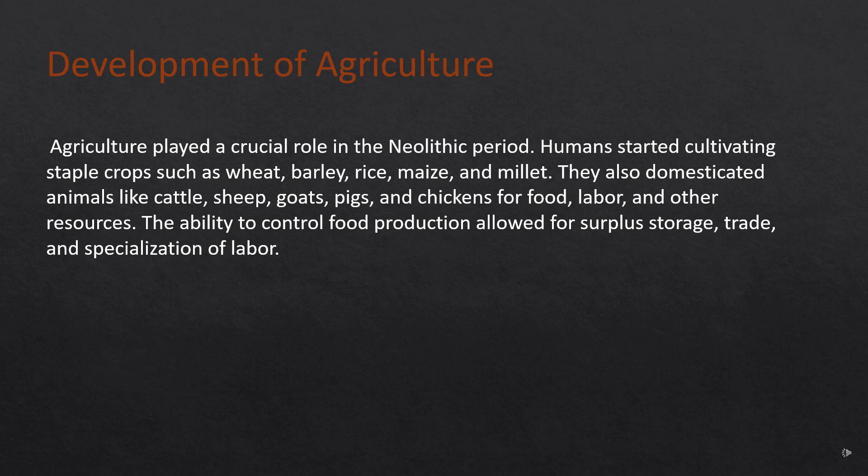Development of Agriculture. Agriculture played a crucial role in the Neolithic period. Humans started cultivating staple crops such as wheat, barley, rice, maize, and millet. They also domesticated animals like cattle, sheep, goats, pigs, and chickens for food, labor, and other resources. The ability to control food production allowed for surplus storage, trade, and specialization of labor.